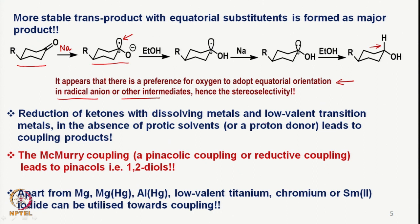Reduction of ketones with dissolving metals and low-valent transition metals in the absence of protic solvents or a proton donor leads to coupling products, as we saw with magnesium-based coupling. There is also a very useful and interesting reaction called McMurray coupling — a pinacol coupling or reductive coupling that leads to 1,2-diols effectively. Apart from magnesium amalgam and aluminum amalgam, even low-valent titanium, chromium, or samarium iodide can be utilized for coupling, providing a variety of methods.